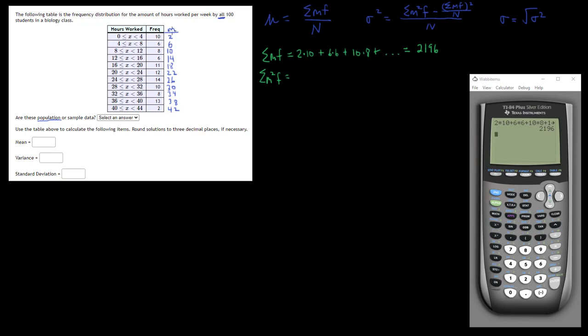So the first M is 2, so we're going to do 2 squared times the frequency 10, plus 6 squared, the second midpoint, times the frequency 6, plus the third midpoint is 10, so 10 squared times its corresponding frequency 8, plus follow the pattern.